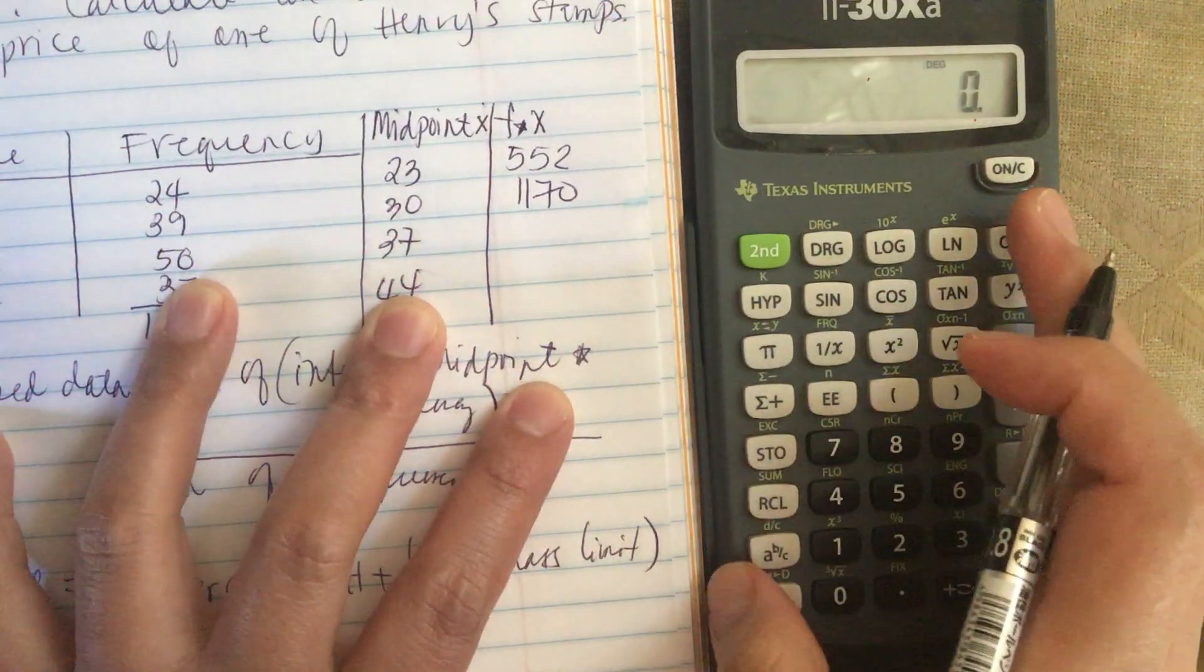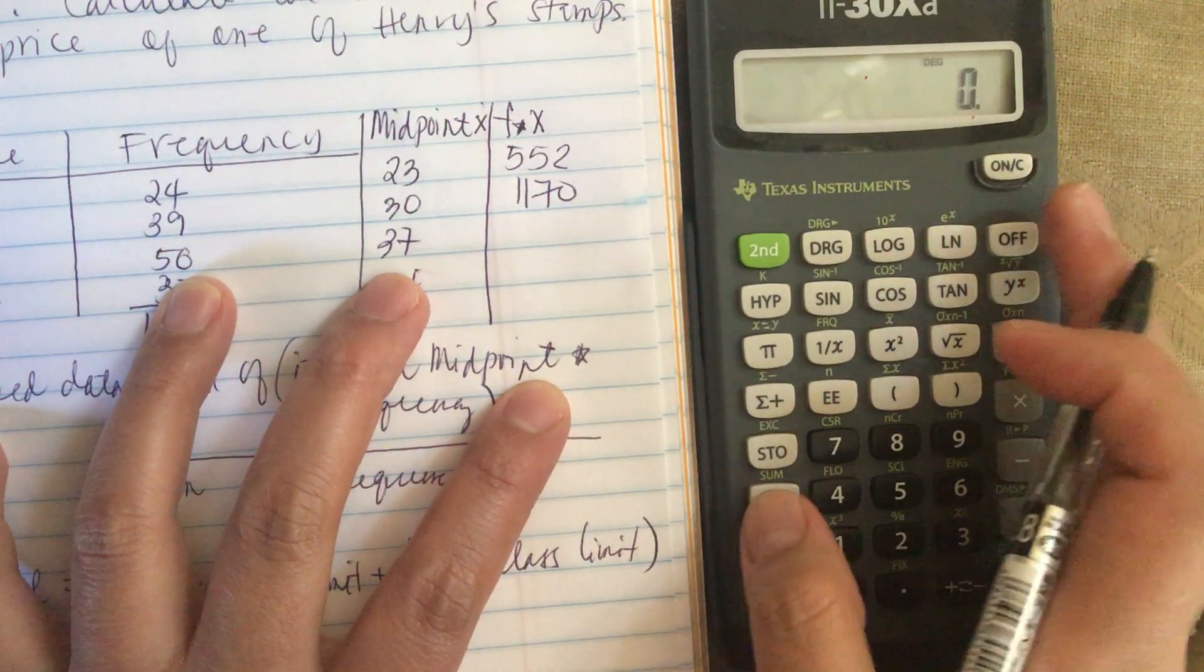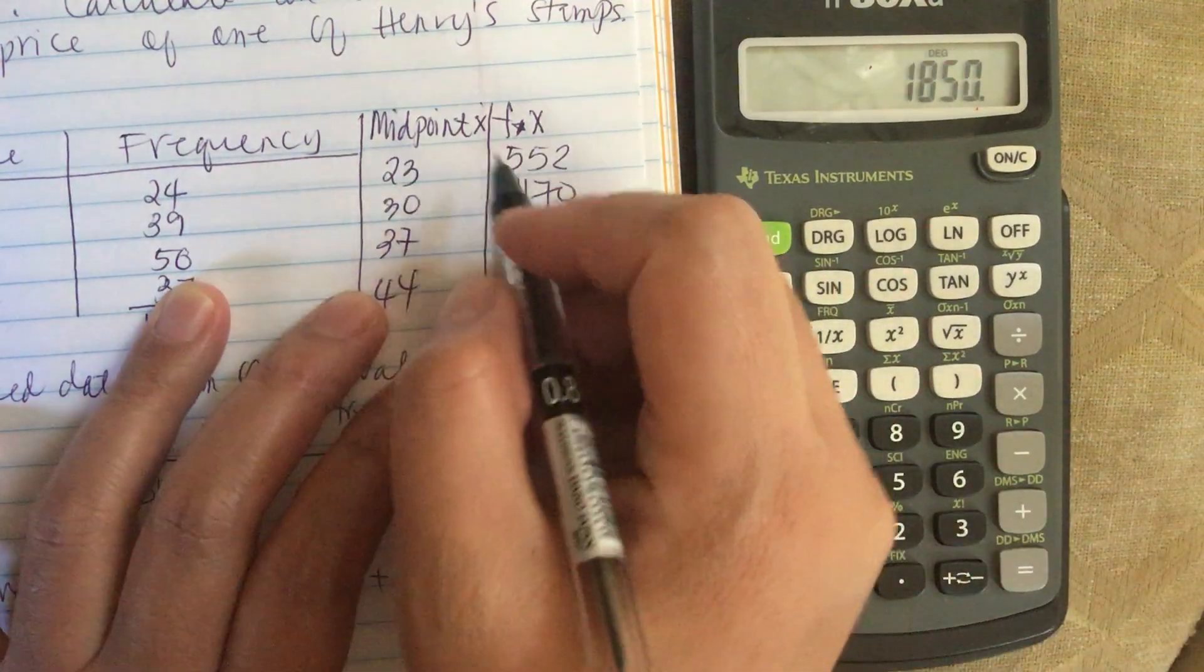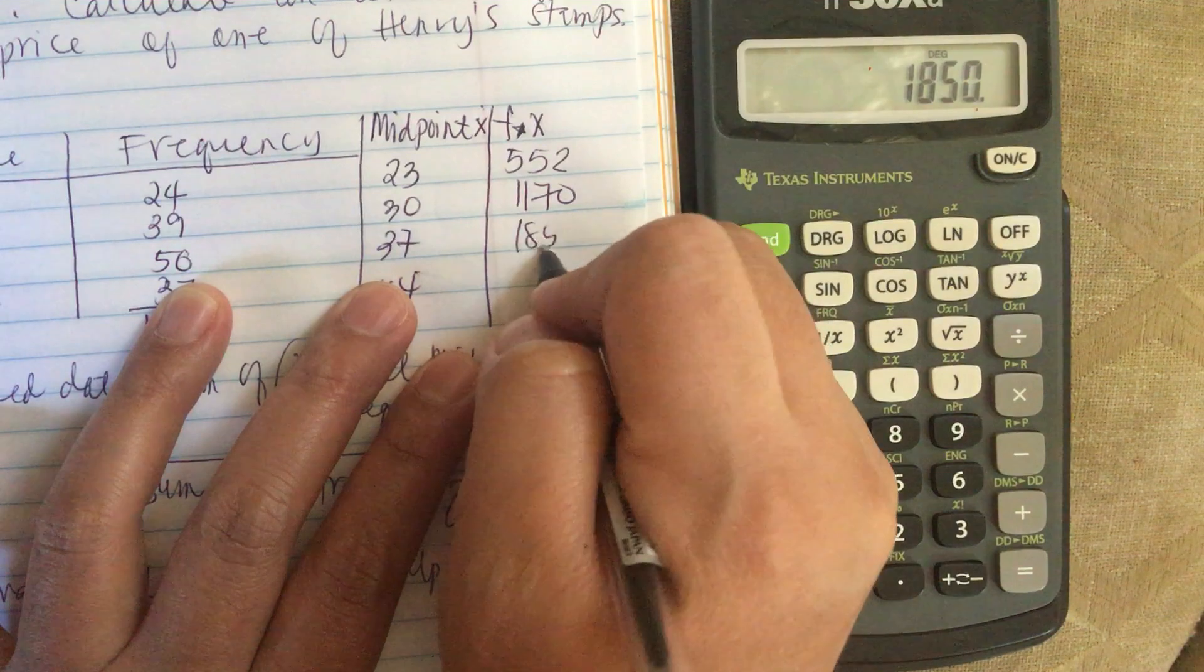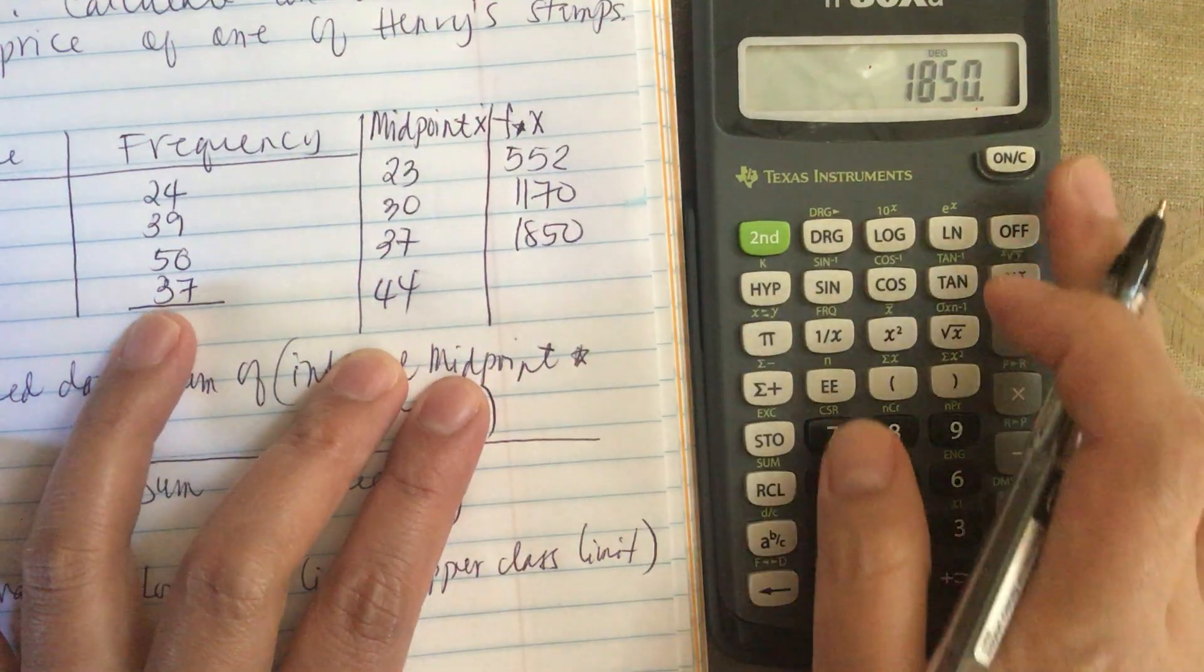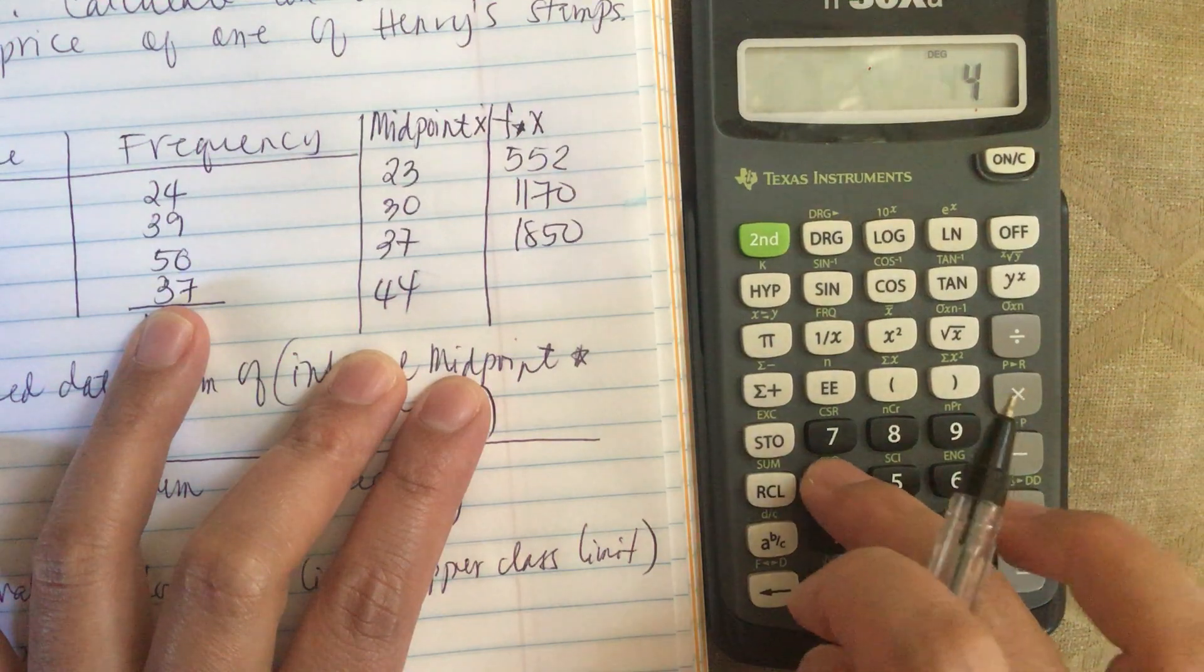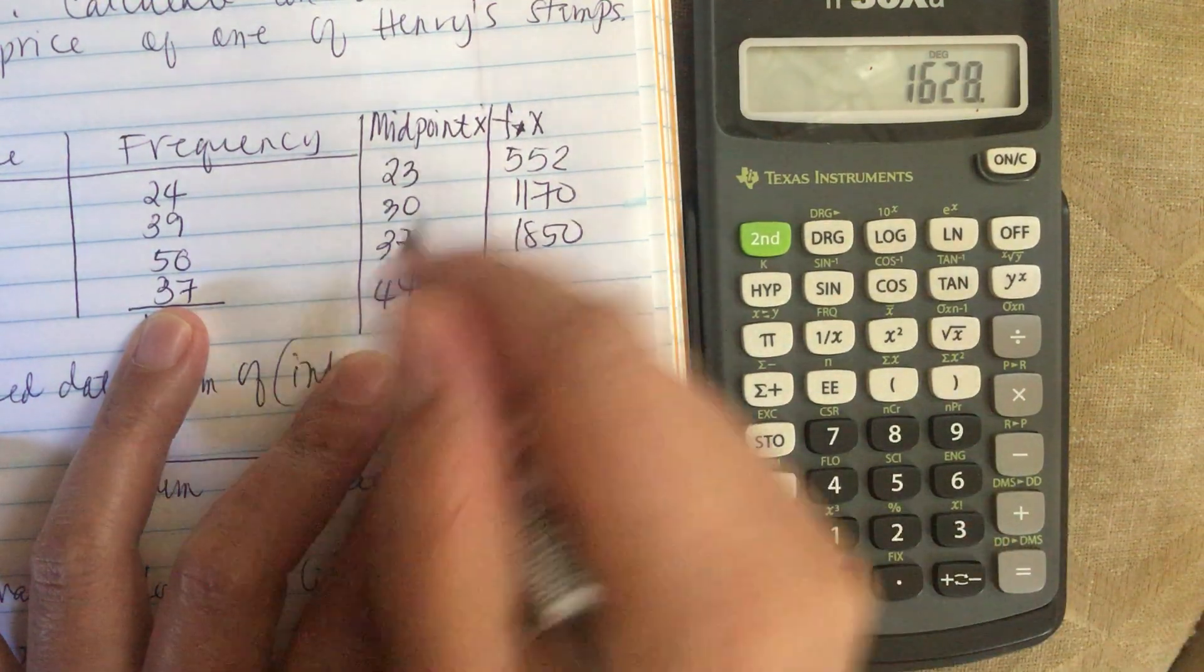And then 50 times 37, which is 1850. And then the last one, 37 times 44, which is 1628.